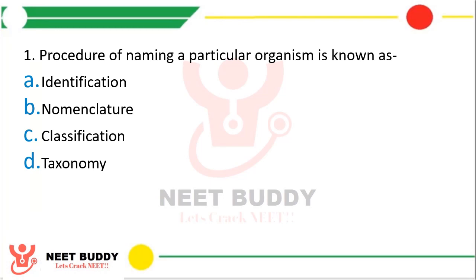The procedure of naming a particular organism is known as: option A identification, option B nomenclature, option C classification, or option D taxonomy. The correct answer is option B, nomenclature.